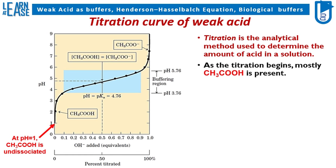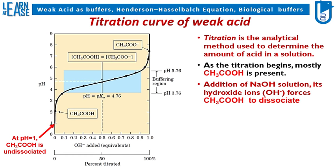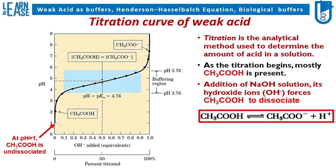As the titration begins, mostly CH3COOH is present in undissociated form. On addition of NaOH solution, its hydroxide ions, OH-, force CH3COOH to dissociate. The equation of dissociation is shown here, where CH3COOH is dissociated to CH3COO- ions and H+ ions.